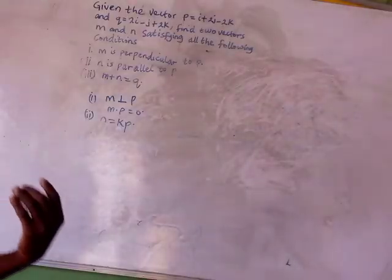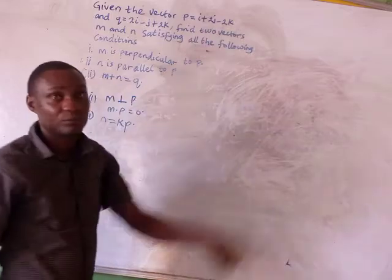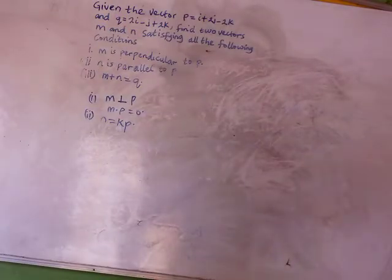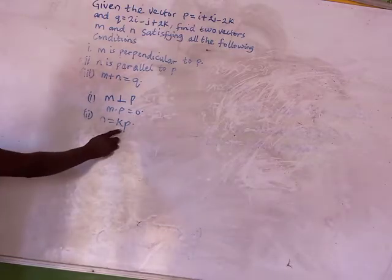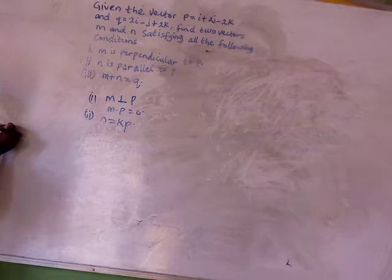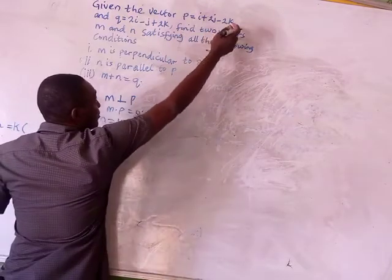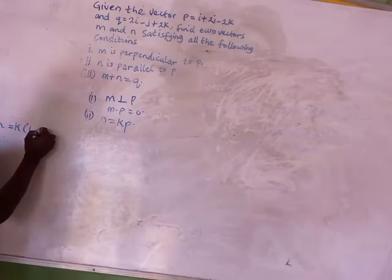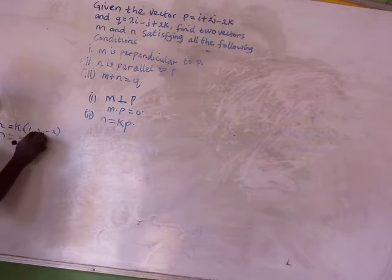I'm going to write these vectors as row vectors to avoid ambiguity with the unit vector k. Since vector N is parallel to P, we express N in terms of scalar k. So vector N equals k times vector P, which written as a row vector is (k, 2k, -2k).